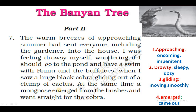At the same time, a mongoose emerged from the bushes and went straight for the cobra. Us time pe ek nevla jhadiyon se nikla aur seedha cobra ke paas pahuncha. Drowsy — sleepy or dozy; susti. Gliding — moving smoothly; dhire se nikalna. Emerged — came out; bahar nikalna.